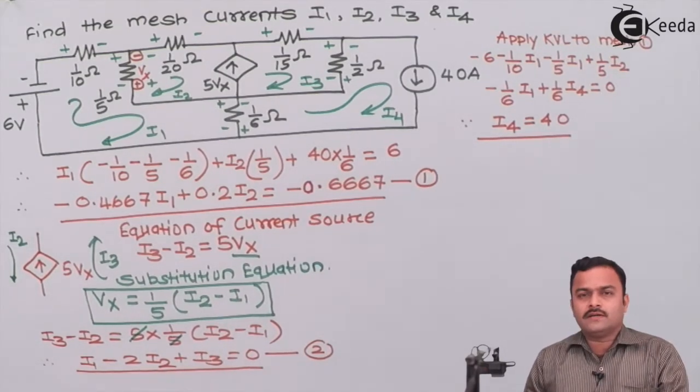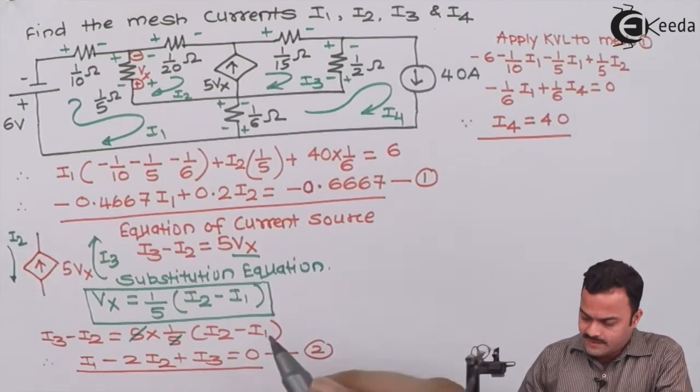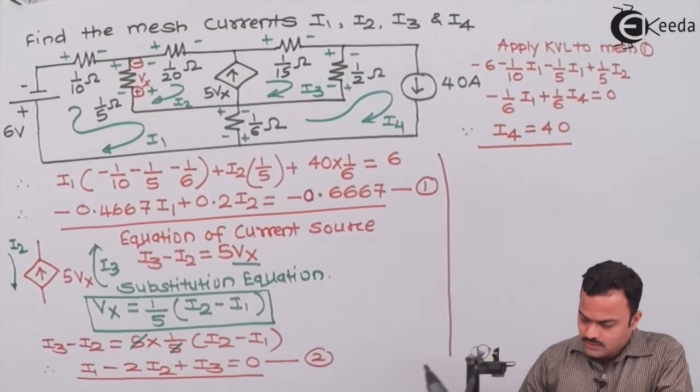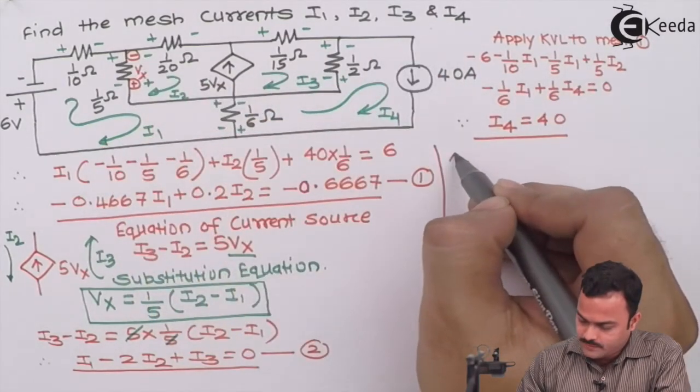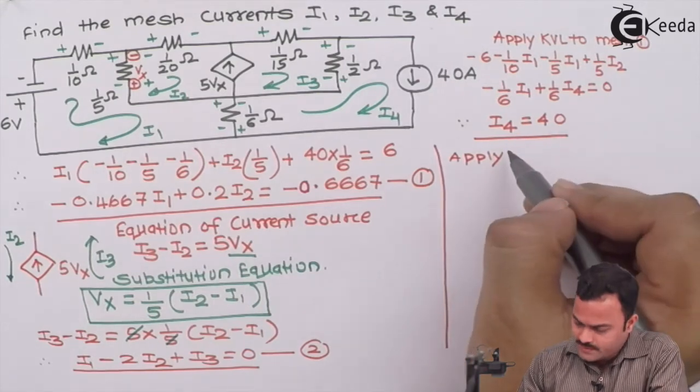We need one more equation for solving i1, i2, i3, i4 and that we will get by applying a supermesh analysis. This is a combination of mesh 2 and mesh 3. Let's apply supermesh KVL to supermesh.